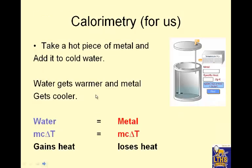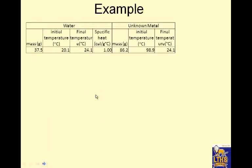Calorimetry. You can take a hot piece of metal and add it to cold water. The water gets warmer and the metal gets colder. Water is... I'm sorry, the water is cold, that's why it's blue, and it's going to gain heat. The metal is hot, it's going to lose heat. So that would actually throw a negative sign in there. So for example, here's the mass of the water, initial temperature of the water, final temperature of the water, specific heat of the water. And then we've got the unknown metal. Mass of the metal, initial temperature, final temperature. Notice your final temperatures for both of them will be the same.